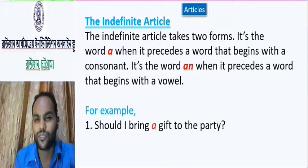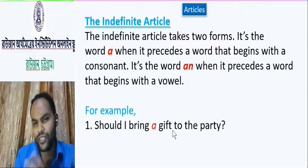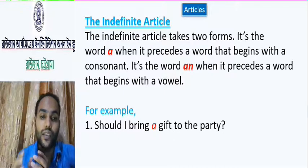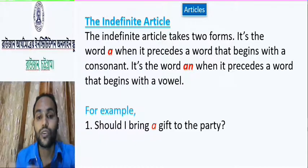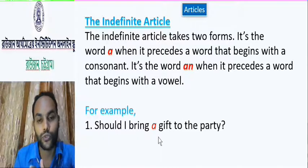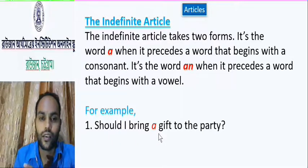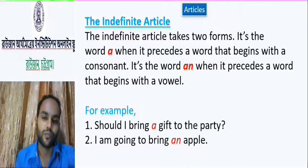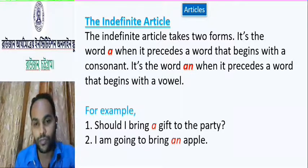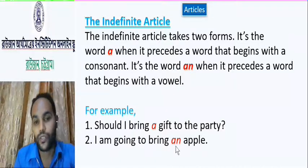Here, 'Should I bring a gift to the party?' — I am asking you. I will bring a gift. Actually, you don't know about the gift, so it's unknown to you. So we have used 'a' here. Another example: 'I am going to bring an apple.' Actually, there are various kinds of apples. You don't know about the apple, so we have used 'an' here.